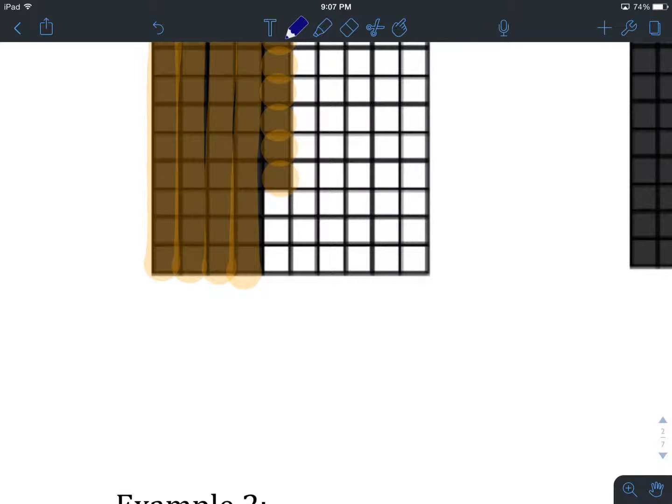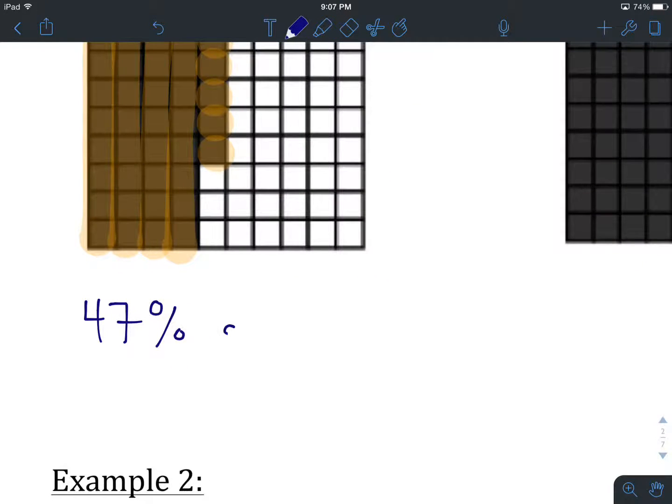So let's write that as a percentage first. We would write that as 47, and then we write down this percentage symbol, which is that little circle, a diagonal line, and another little circle. If we were going to write this as a fraction, we would write the number of shaded parts, which is 47, over the total number of parts, which is 100, when we're talking about percents.